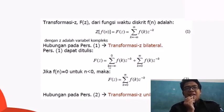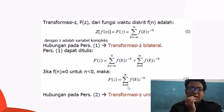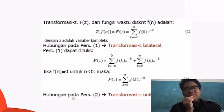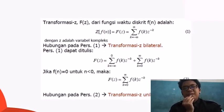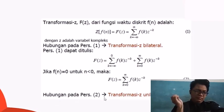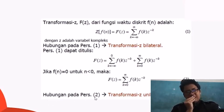Persamaan pertama yaitu transformasi Z bilateral, dimana untuk N kurang dari 0 maka yang sebelah kanan diproses dan dilihat F(Z). F(Z) K sama dengan 0, F(K) M sama dengan minimum. Yang akan digunakan lalu adalah hubungan pada persamaan kedua, yaitu transformasi unilateral atau transformasi Z satu sisi.